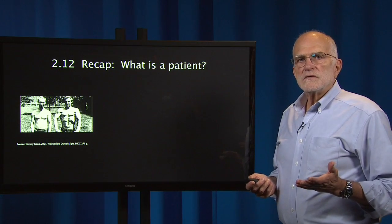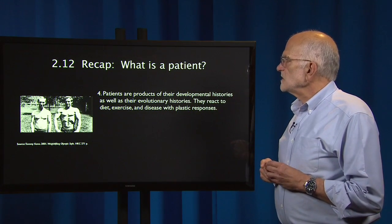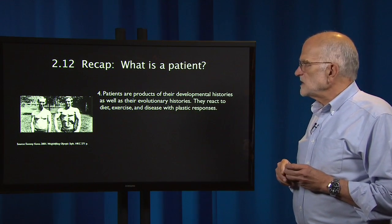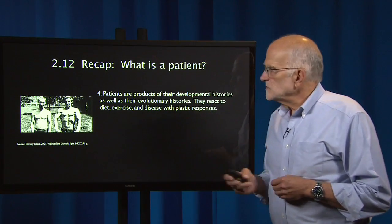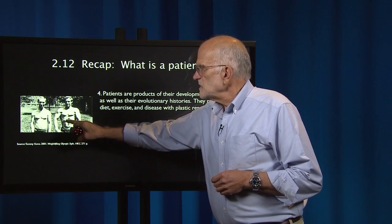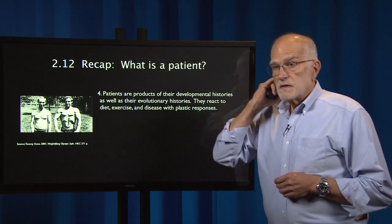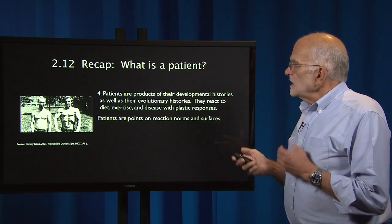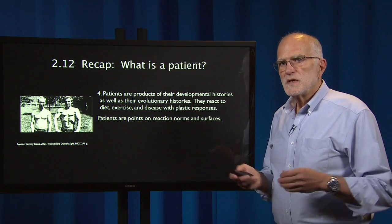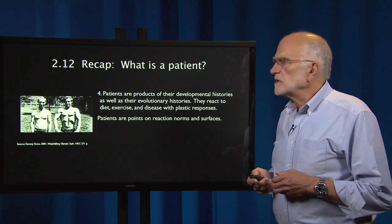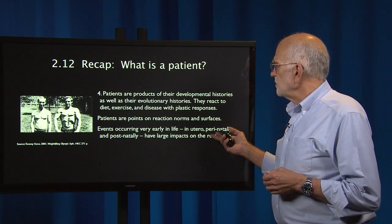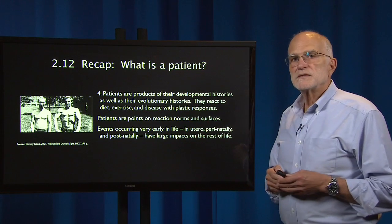The next important aspect of patients is that they are products of their developmental histories as well as their evolutionary histories. They react to diet, exercise, and disease with plastic responses. Here are the Ewald brothers, who are identical twins — one undertook long-distance running at 18 and at the same age his brother took up weightlifting. This makes the point that patients are points on reaction norms and reaction surfaces that integrate their individual developmental histories. It also emphasizes that events occurring very early in life — in utero, perinatally, and postnatally — have large impacts on the rest of life.